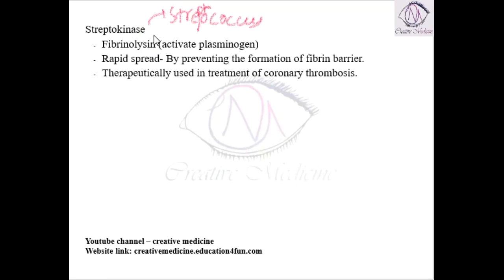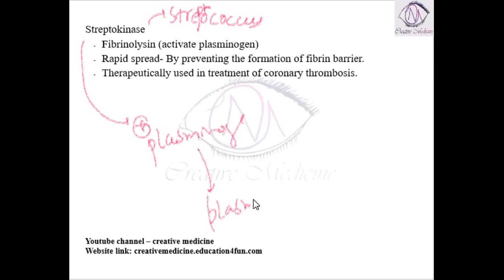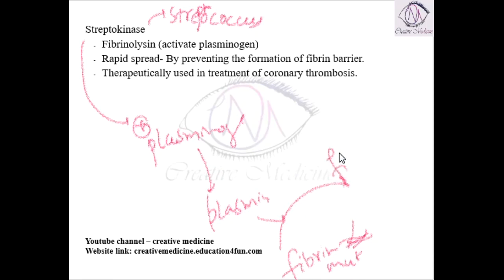This streptokinase is actually a fibrinolytic agent. It will activate plasminogen, which gets converted into plasmin. What does this plasmin do? It will cause fibrin multimers, or fibrin clot, to get converted into fibrin monomers. Thus it will dissolve the clot, so it is a fibrinolytic — it is lysing or dissolving the fibrin.